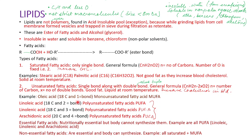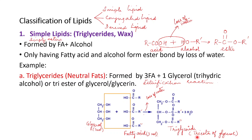Oleic acid is called a monounsaturated fatty acid (MUFA) because only one unsaturation is present. Linoleic acid is also an 18-carbon compound but has two double bonds, making it a polyunsaturated fatty acid (PUFA). Arachidonic acid is a 20-carbon fatty acid with four double bonds — also a PUFA. Fatty acids are further classified as essential fatty acids (e.g., all PUFAs) and non-essential fatty acids (e.g., all saturated fatty acids plus MUFAs).